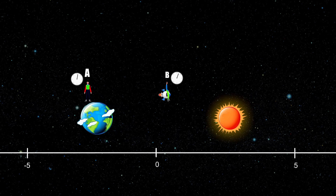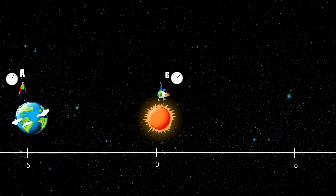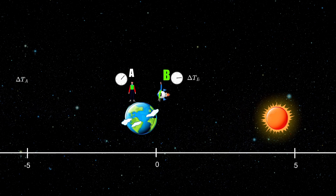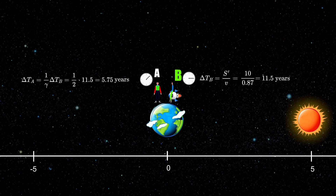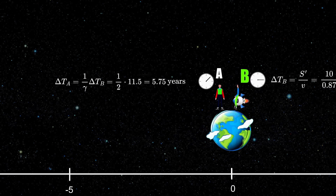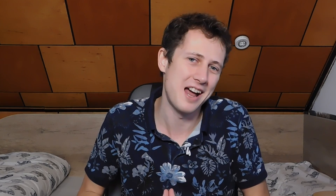But now if you look at this problem from the reference frame of observer B, it takes him 11.5 years of proper time. The clock of observer A is slower by a factor of 2, and therefore it should only read 5.75 years when they meet again. And this is what is paradoxical. It is not that you can't calculate the time differences — it is that the result is inconsistent when observer B watches observer A's clock.